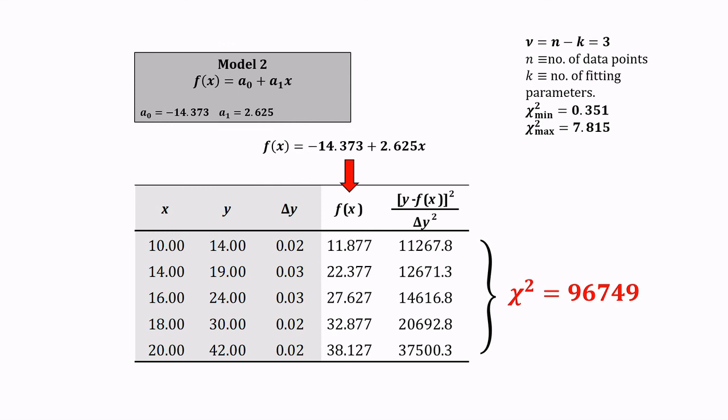Therefore, the calculated value of chi squared lies outside of the range between the critical values. So, we conclude that model 2 is not a good fit.